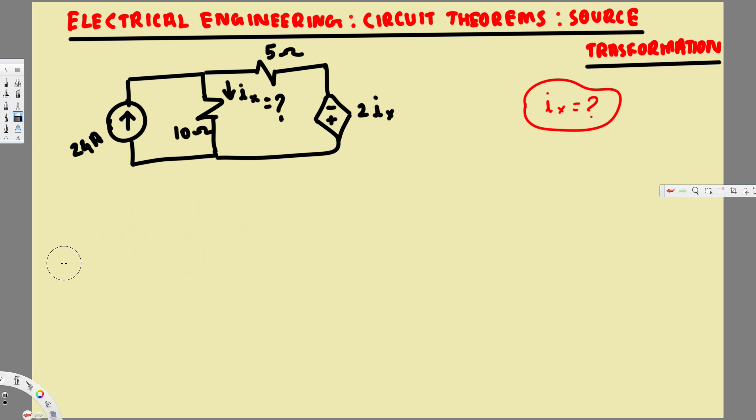What's going on guys, in this video we're going to see an example on source transformation technique. The question is asking to find this current across this 10 ohm resistance, and we also have a current source and a dependent voltage source.